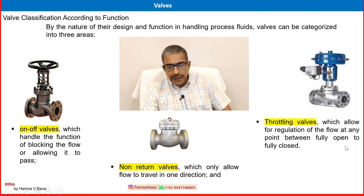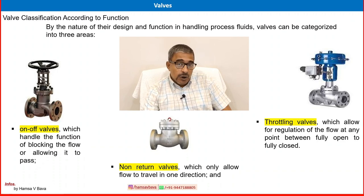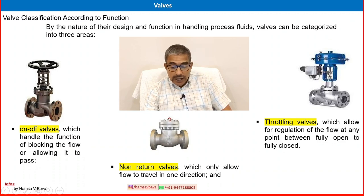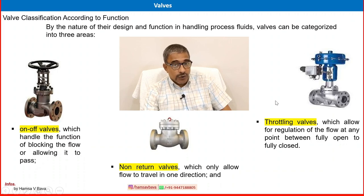The third category is the throttling valve, which is the opposite of an on-off valve. A throttling valve can work as an on-off valve — zero percent or 100 percent open is possible — but mainly it is used for partial positions such as 10, 20, 25, or 50 percent open. Throttling valves allow regulation of flow at any point between fully open and fully closed. It is mainly used as a control valve, but many other applications exist.